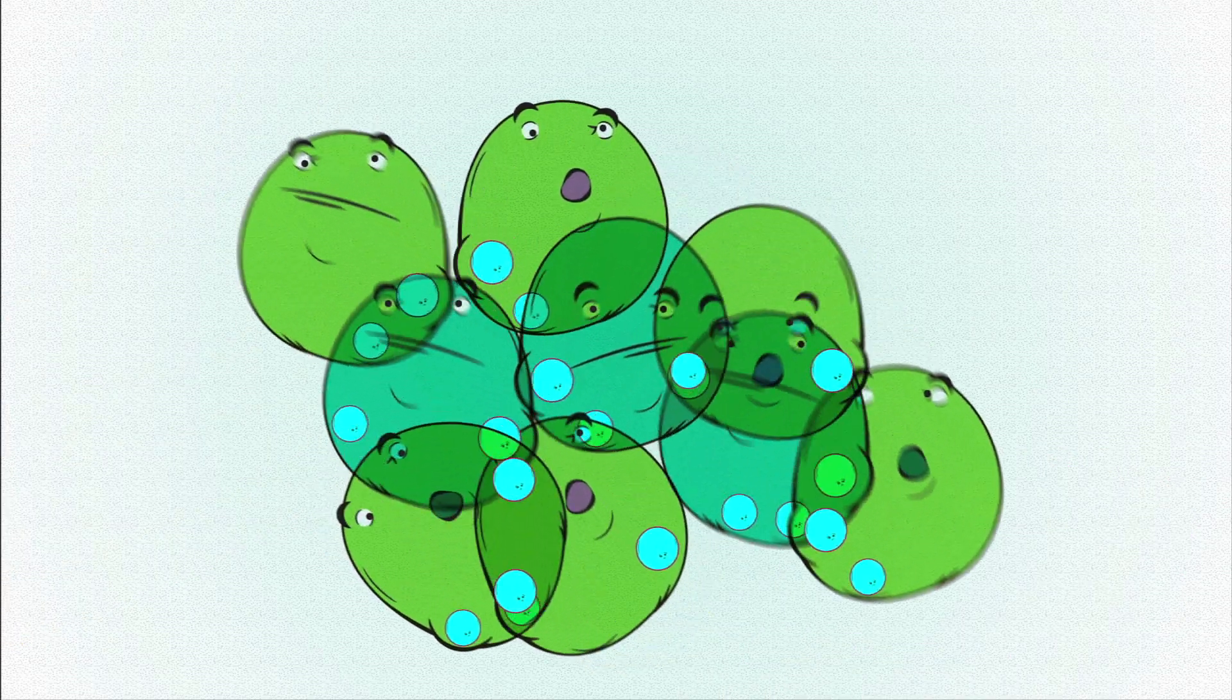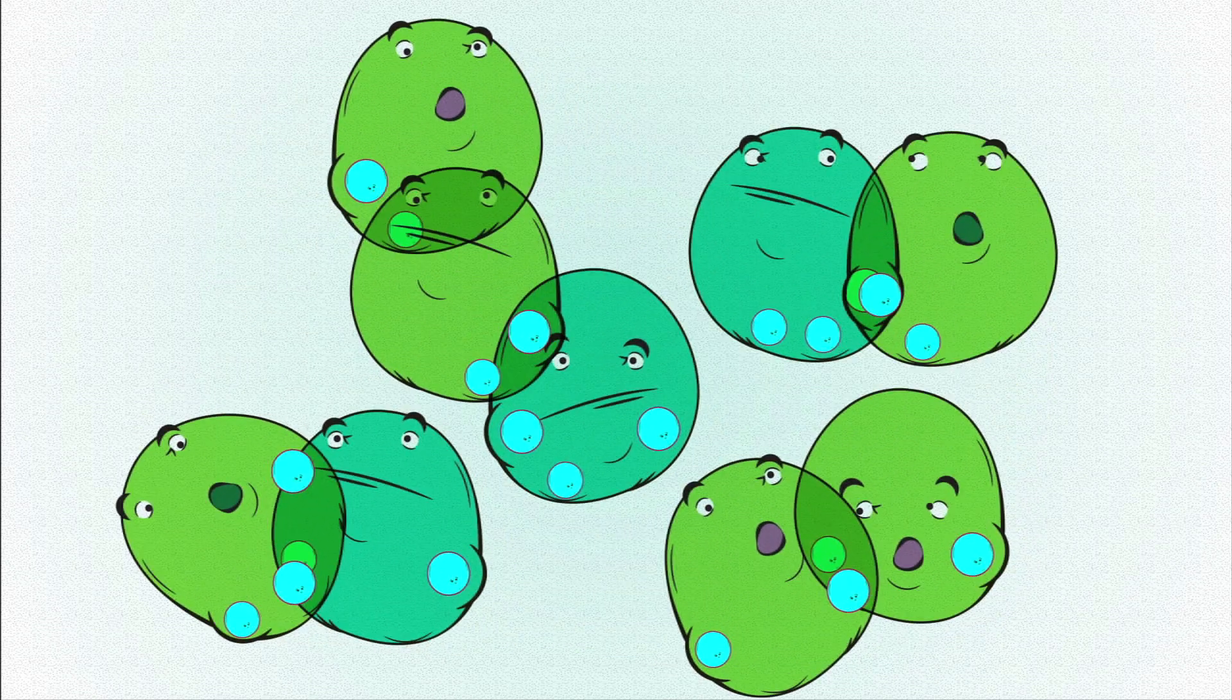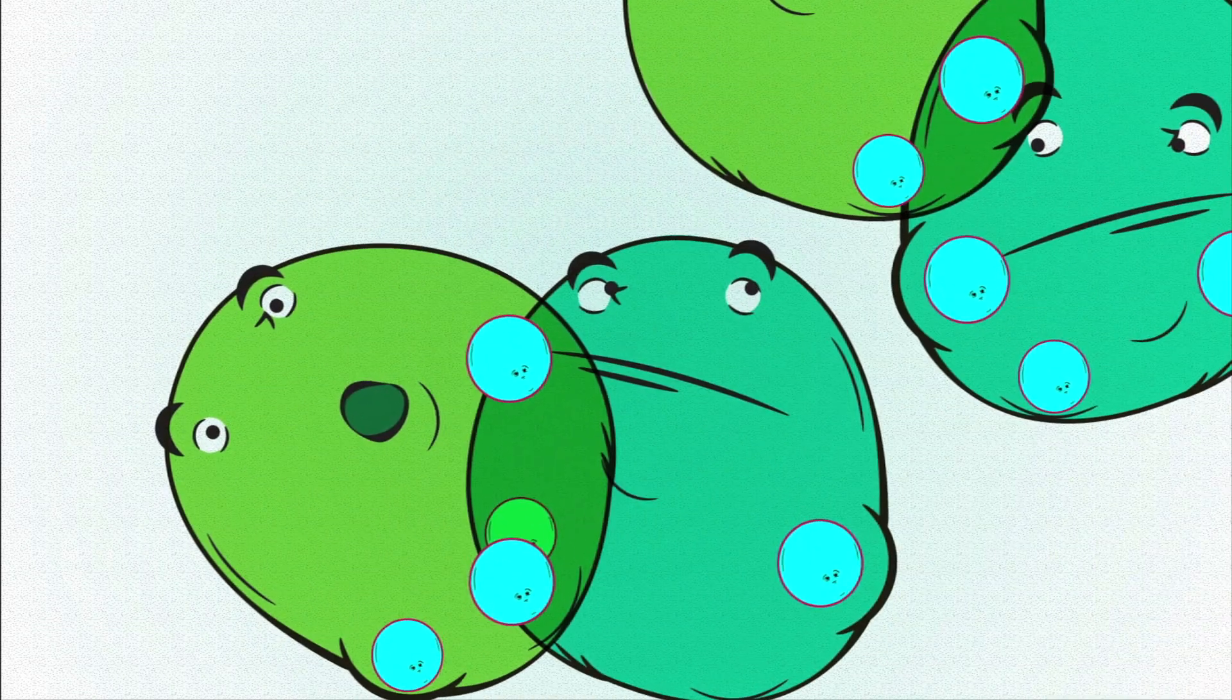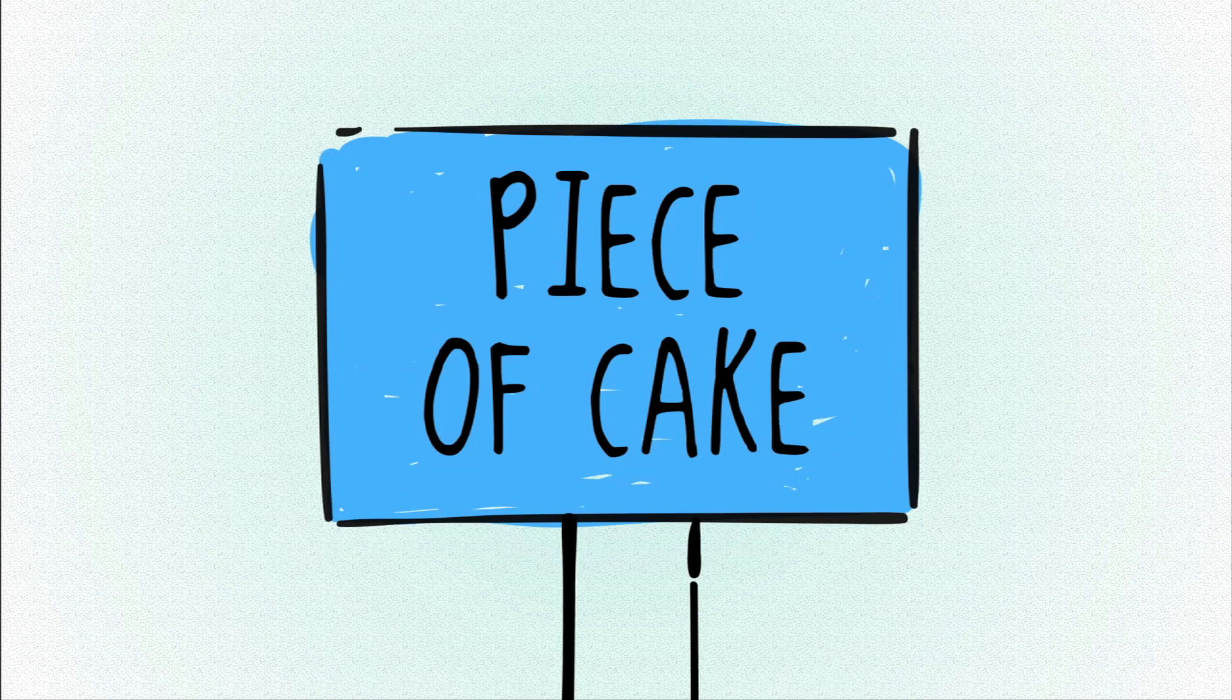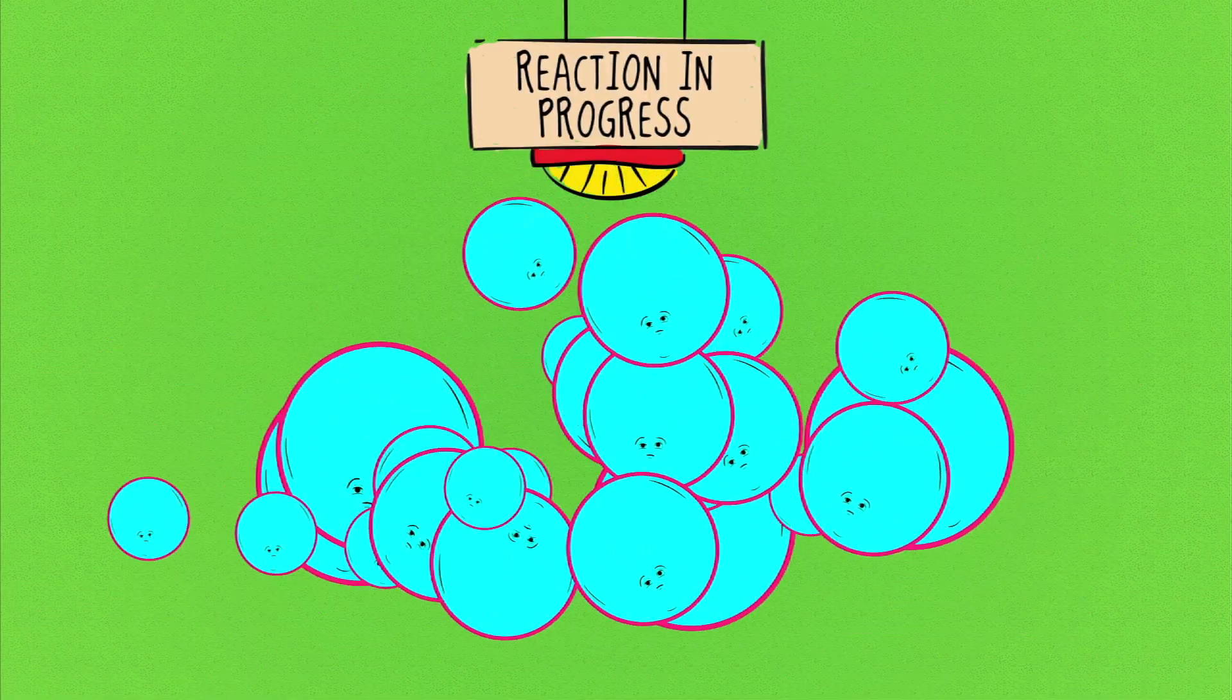Once the transition state has been achieved, the atoms become willing to leave their current molecular friends and go make new friends elsewhere. Once they're convinced, it's a piece of cake. Bonds break, atoms rearrange, and the rest of the reaction happens automatically.